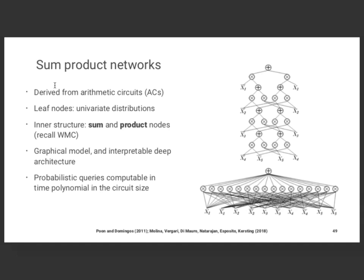Regardless of whether you consider variations of arithmetic circuits or sum-product networks in the form of weighted model counting, they lead to the same kind of representation. Both have the same computational abilities in terms of computing the partition function and other conditional properties when reduced to the weighted model counting formulation. The advantages of SPNs are: (a) it's a graphical model, (b) it's an interpretable deep architecture with latent variables, and (c) probabilistic queries are computable in time polynomial in the circuit size.